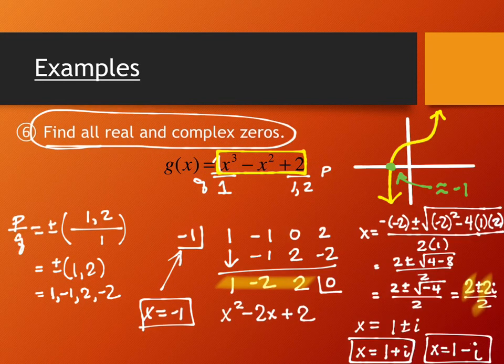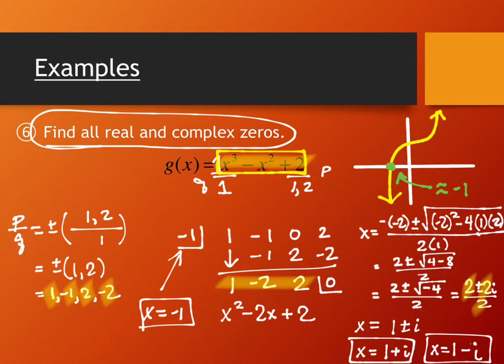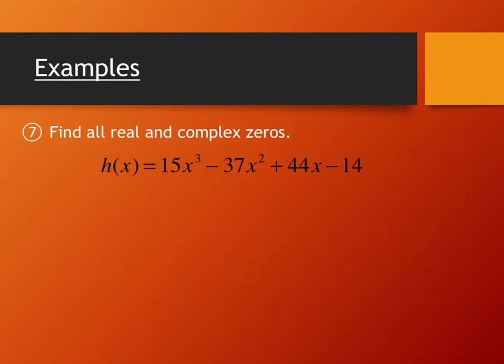If you don't have a graphing calculator, you can use a scientific one by plugging each candidate value directly into the original equation one at a time and checking if the output is zero. Through the graphing method you're just using the x-intercept to identify candidates quickly. On the next example, the crossing point is a bit fuzzier, so let me show you what I mean.